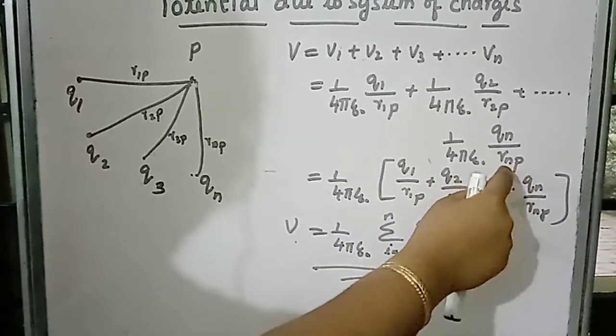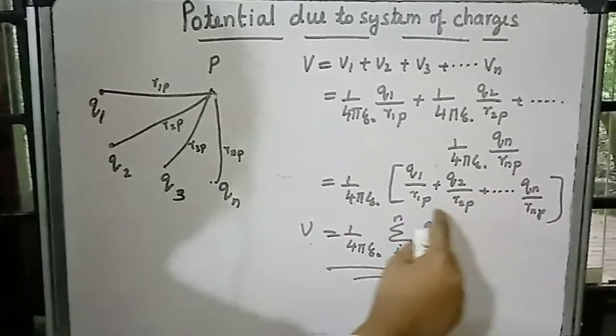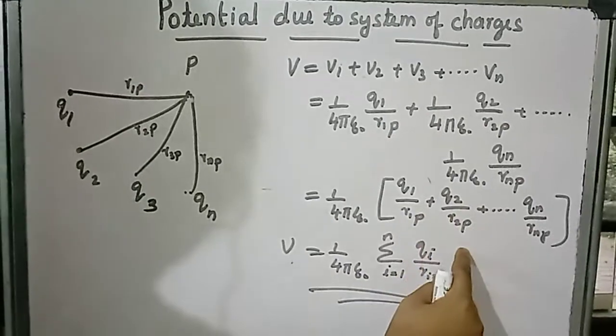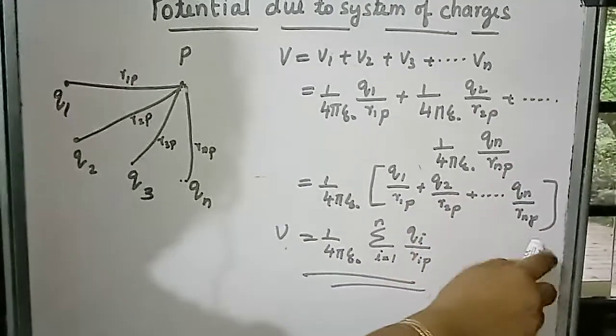1 by 4 pi epsilon 0 common, and then Q1 divided by R1P plus Q2 divided by R2P plus Qn divided by RnP.